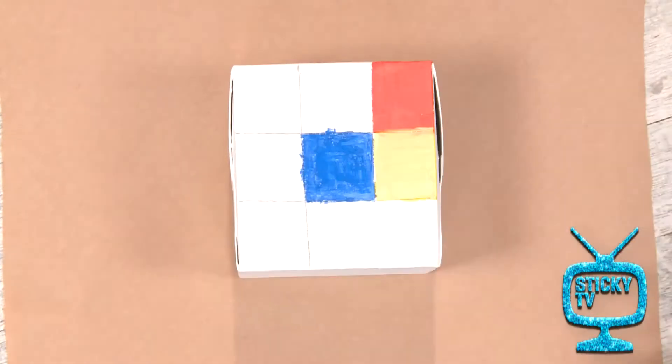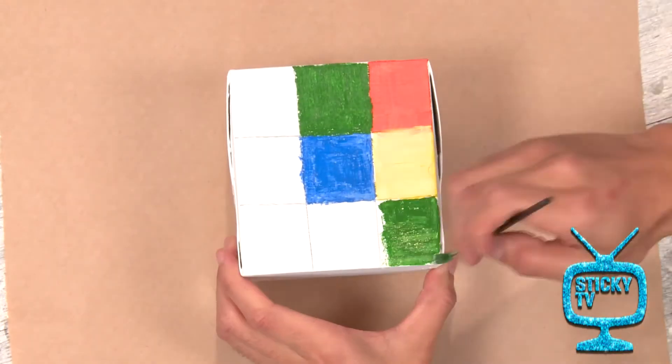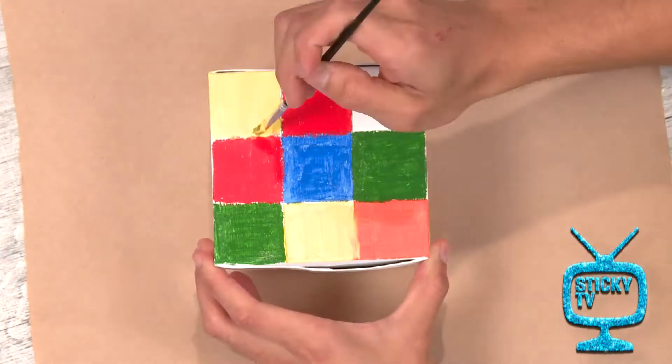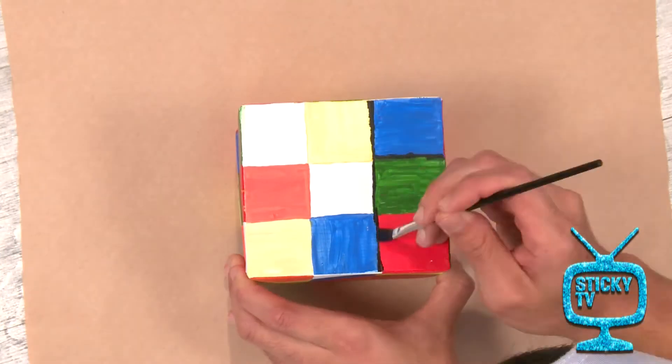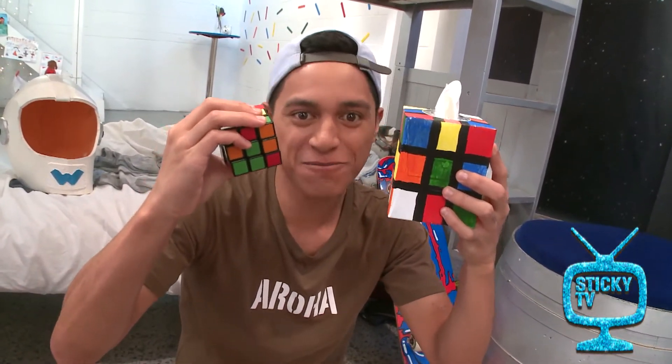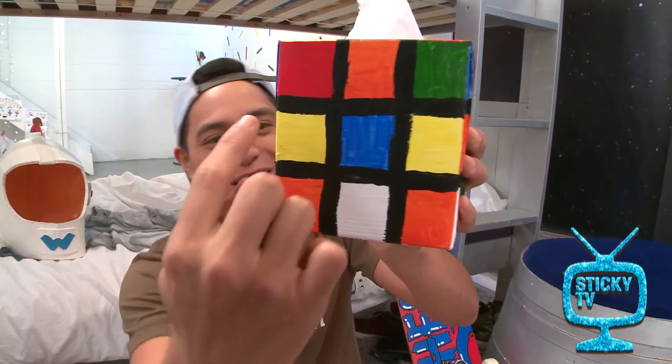Don't worry about the edges. Step number four: once it's dry, paint black lines in between the squares. And I am done! Check that out. I thickened up the lines just a little bit to make it stand out.